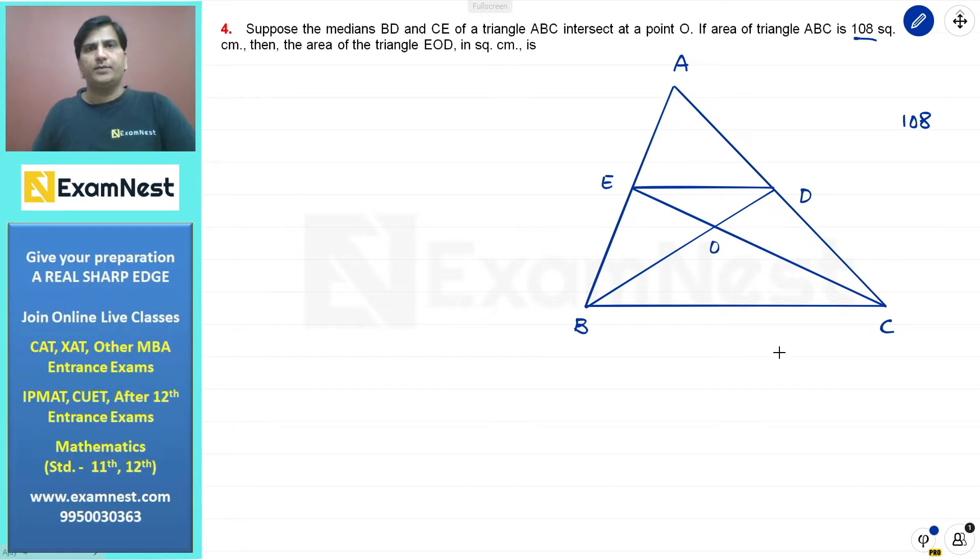Medians which we have called centroid, and centroid in medians divide in the ratio 2 to 1. That means, we have to talk about CE, so if this part is 1 then this part is 2.